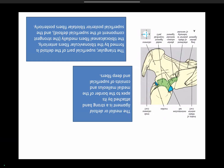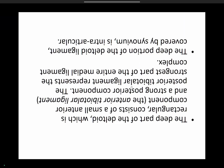The deltoid is also divided into superficial and deep parts. The triangular superficial part is formed by tibionavicular anterior fibers, tibiocalcaneal fibers, and the superficial portion of posterior tibiotalar. The deep part is composed of a small anterior tibiotalar component and a strong posterior tibiotalar. You need not remember this division in detail — just the classification I showed earlier.